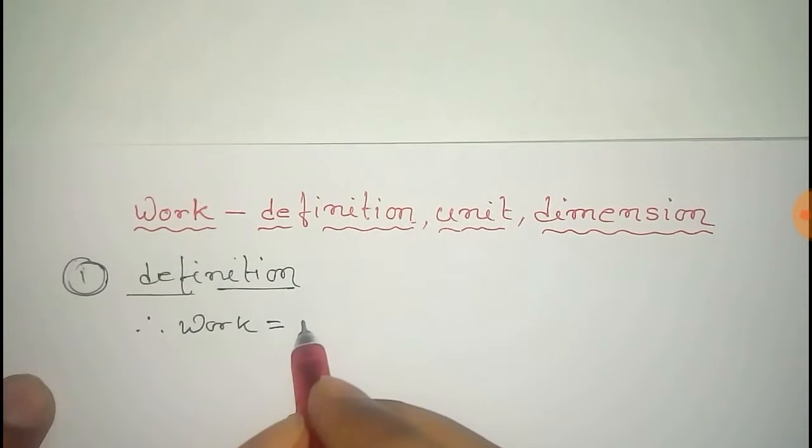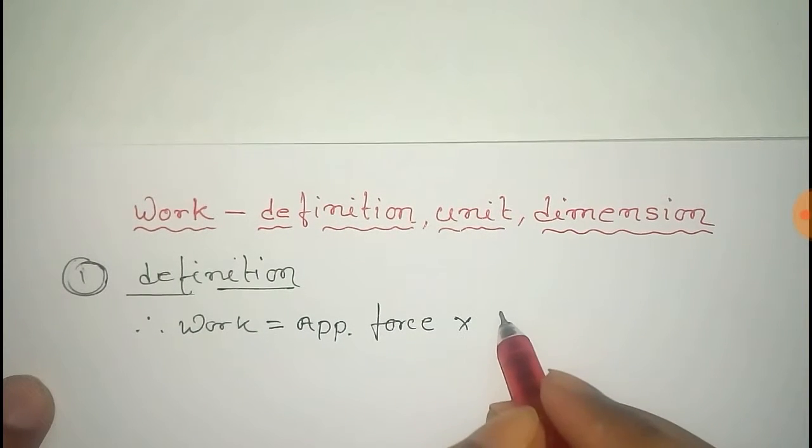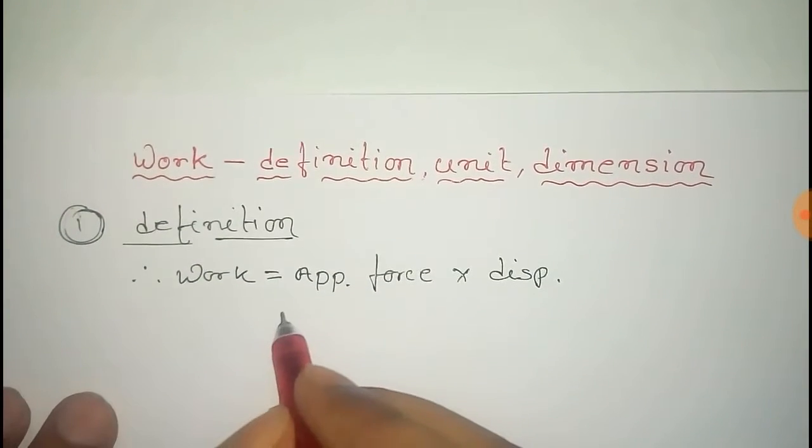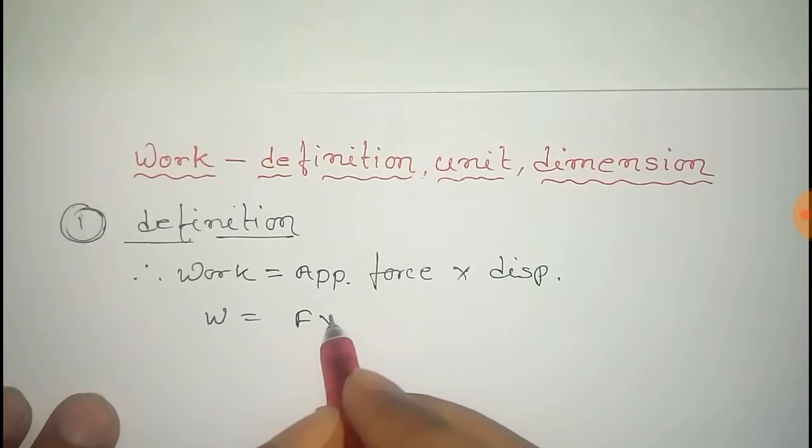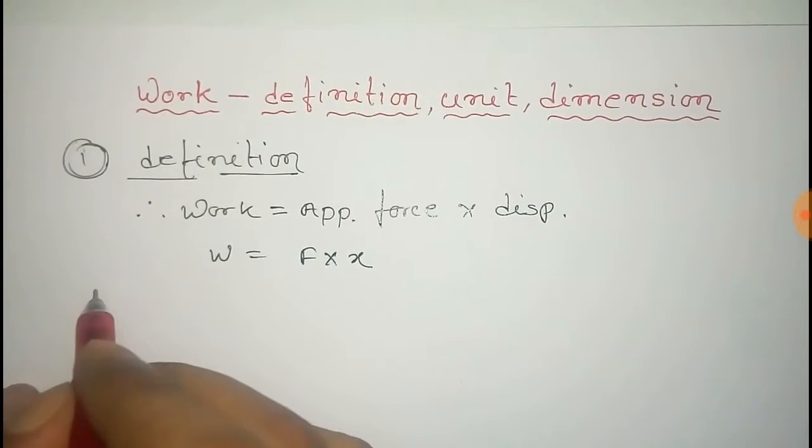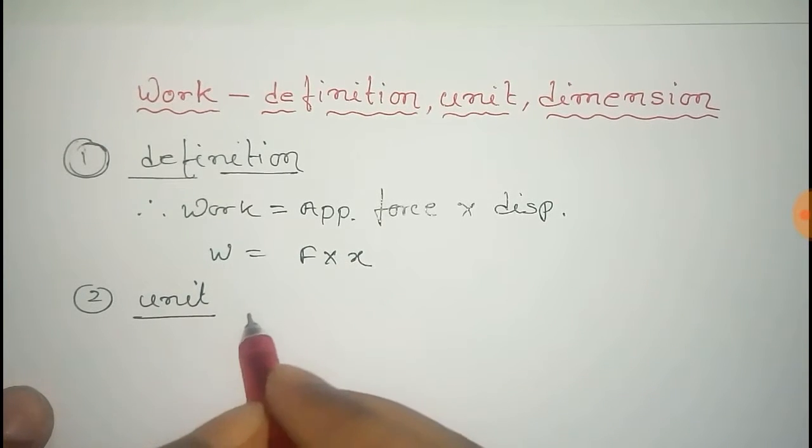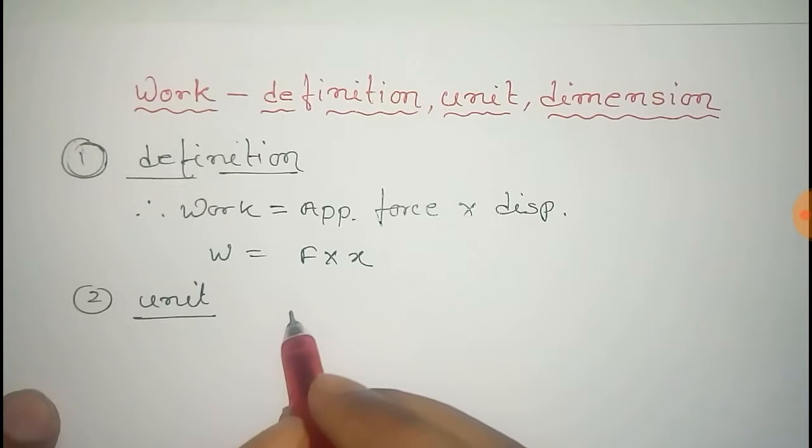You can say that work is equal to applied force multiplied with its displacement. So W equals F into displacement X. Now its unit in SI system is Joule.